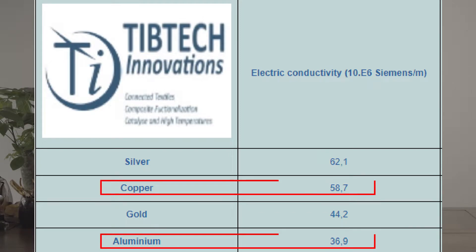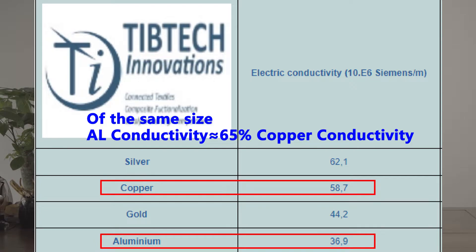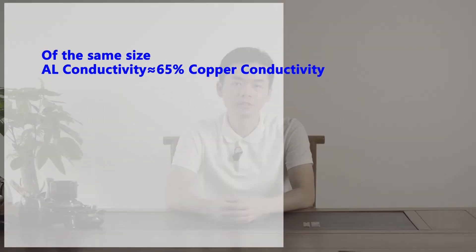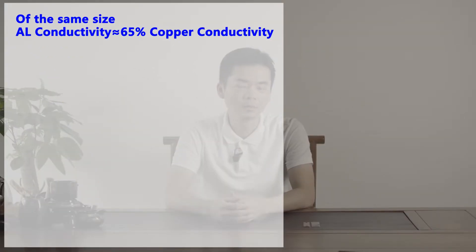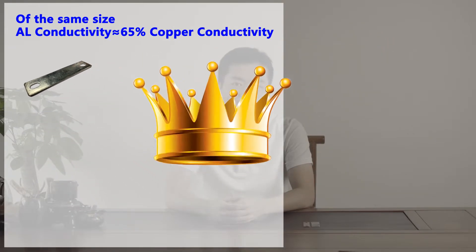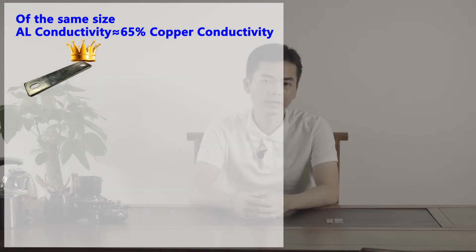Conductivity is the most frequently mentioned point many people use to argue that copper busbar is superior to aluminum busbar. Well, this statement is only half of the truth. On one hand, for the same size of the two kinds of material, aluminum busbar conductivity is only 65% of copper busbar. So in this sense, copper busbar totally outperforms aluminum busbar.